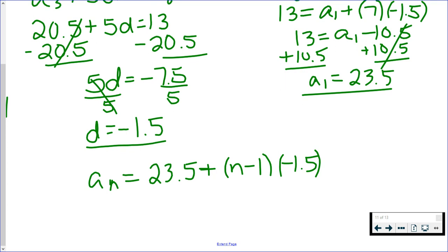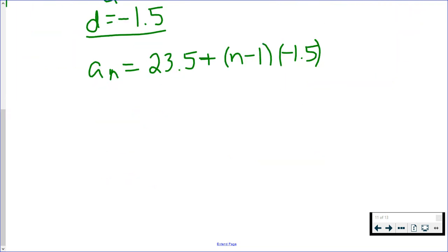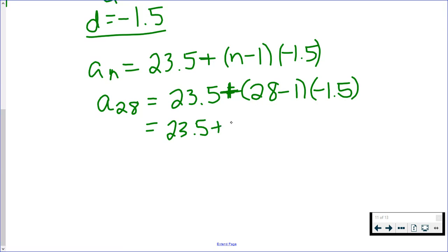Remember, we're trying to find the 28th term. So the last thing we need to do is actually find our 28th term. That means n is 28. So I would pause the video so you can do this on your own and then see if you get the right answer. So first I do 28 minus 1, and then I will multiply that by the negative 1.5. And we get that our 28th term is negative 17.